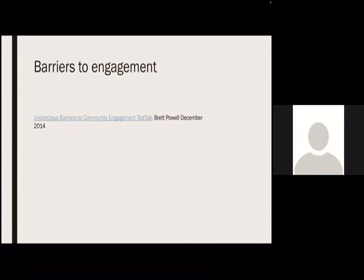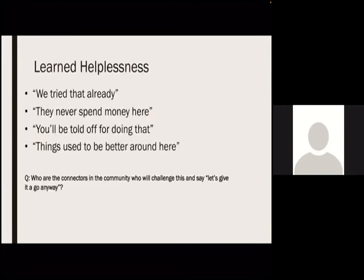When we do eventually go out into the community to ask people questions, sometimes one of our barriers is thinking people are going to be really negative. You'll get a copy of this presentation — there's a link to a TED talk about what some of those barriers are to people engaging with new ideas. The first one is learned helplessness. When you go out into a community and say we're thinking of doing this, communities will say things like: we tried that already, they never spend money here, you're told off doing that, things used to be better around here.